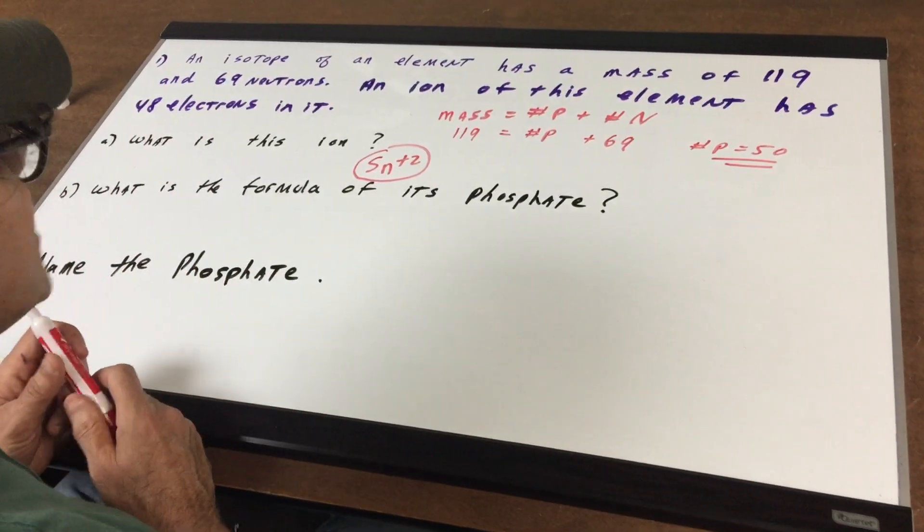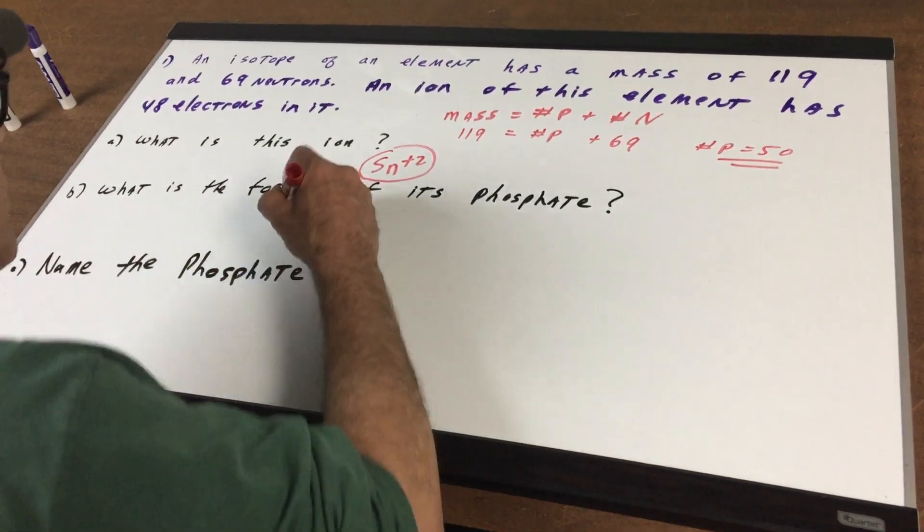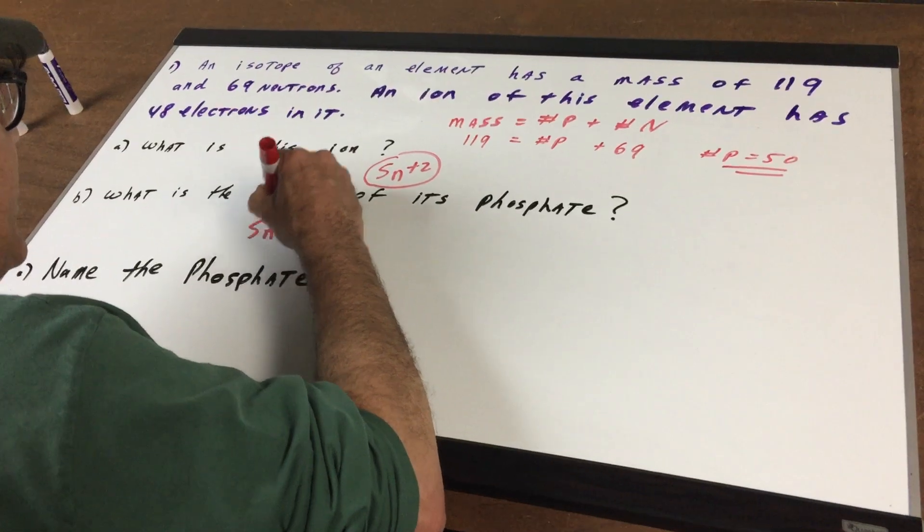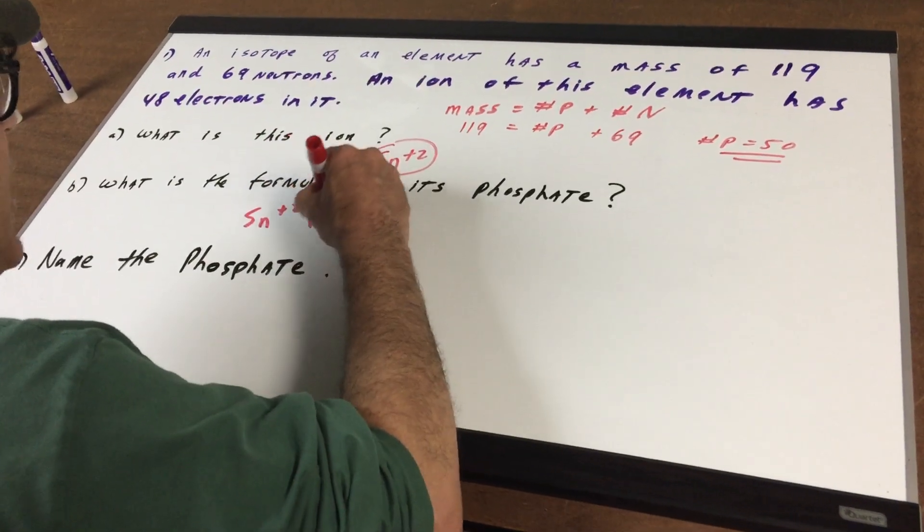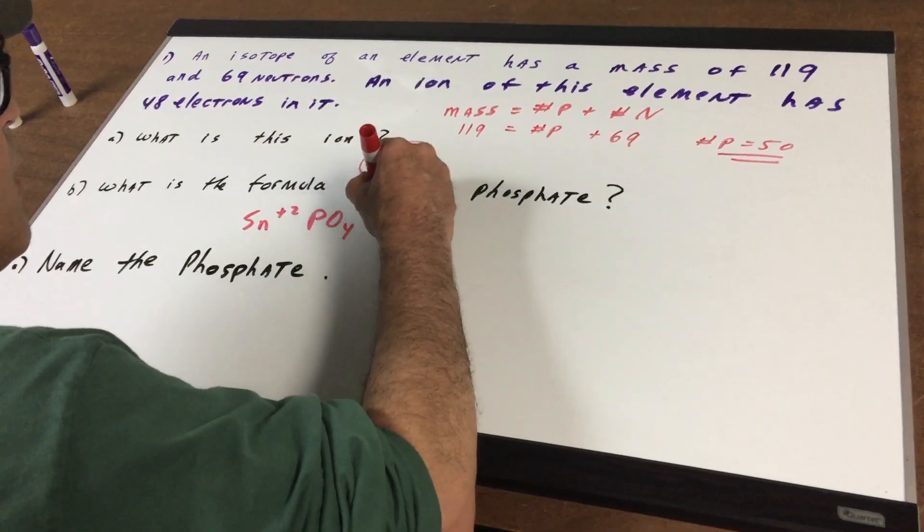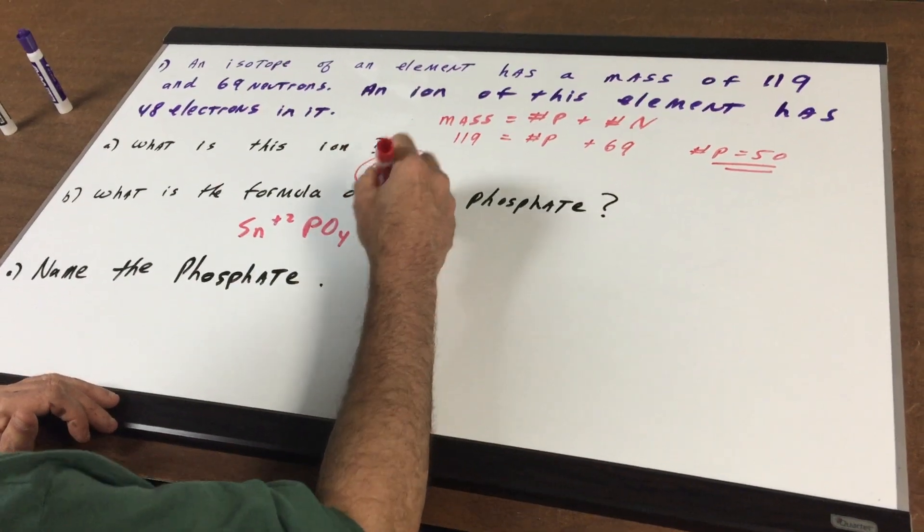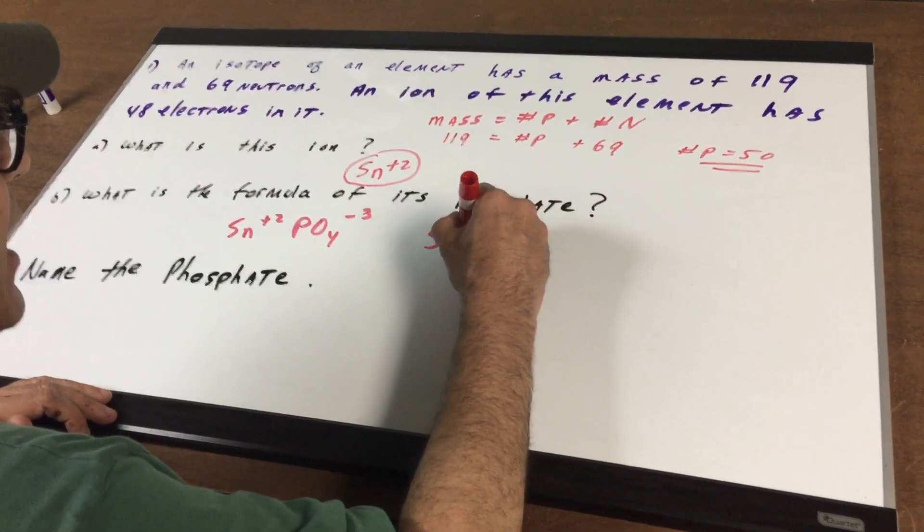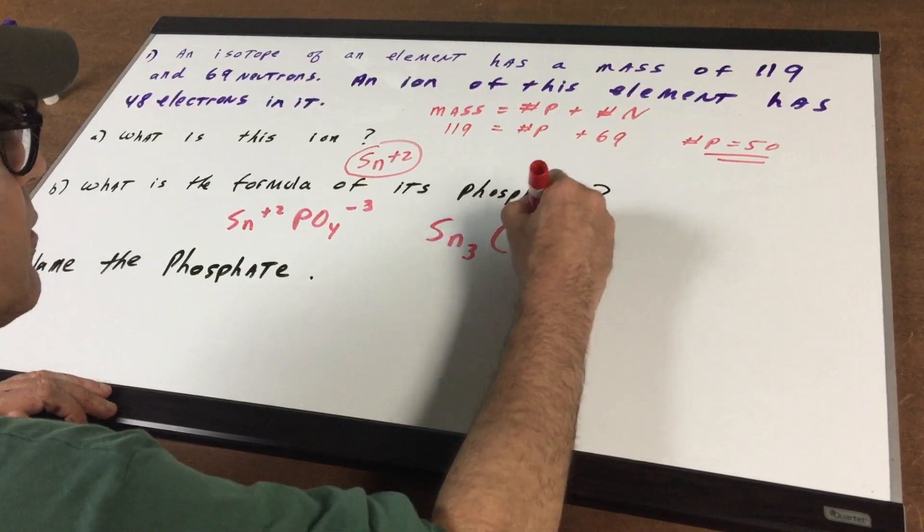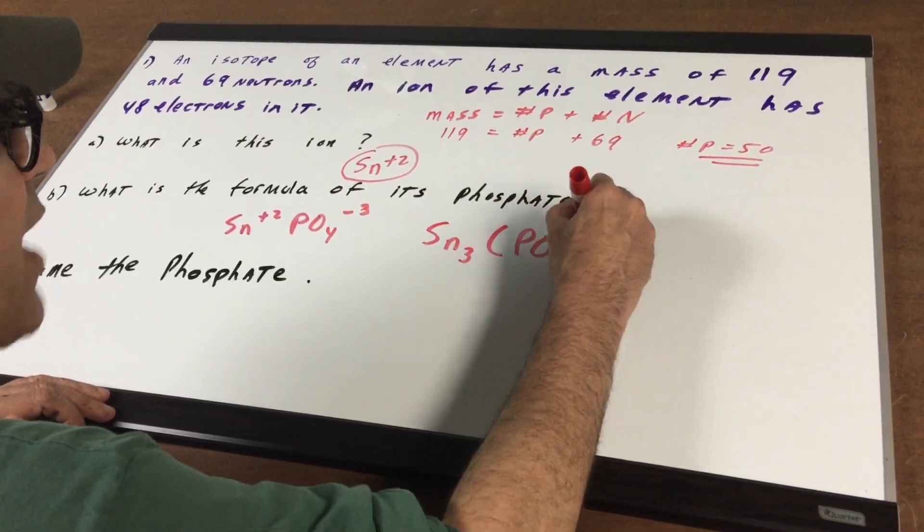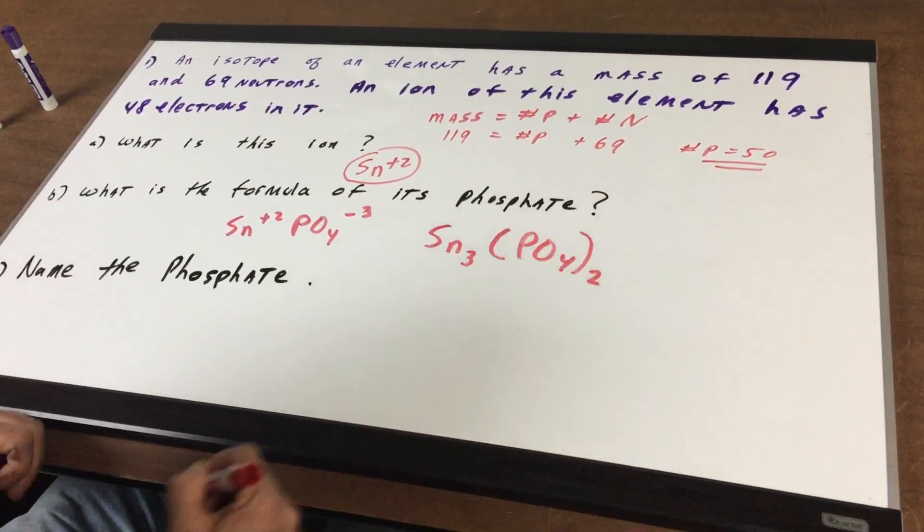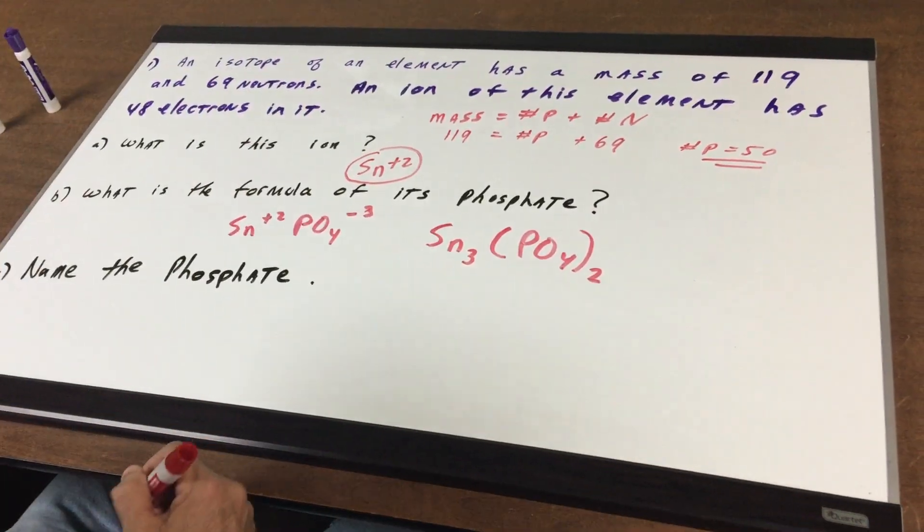Part B. What is the formula of its phosphate? Well we know that tin is plus 2 and phosphate is PO4 minus 3. I'm going to crisscross and I get Sn3 and then the phosphate we put in brackets so you don't make the two numbers hit and you get Sn3(PO4)2.